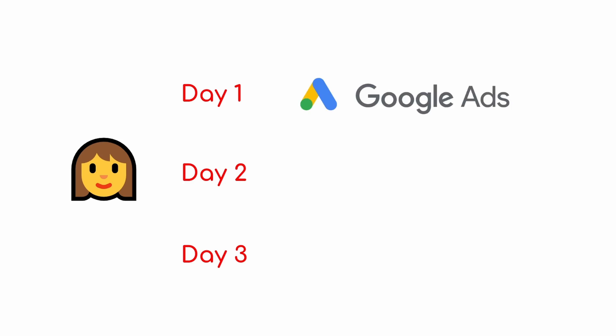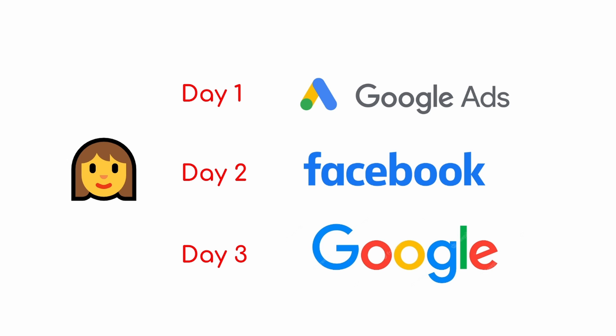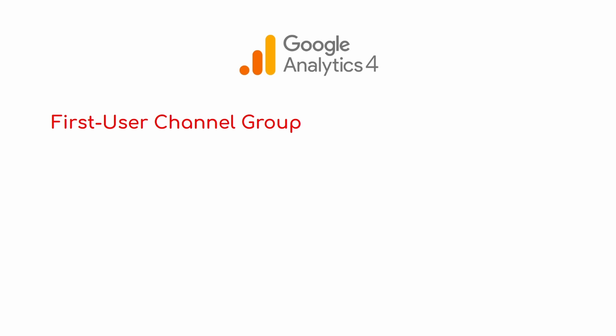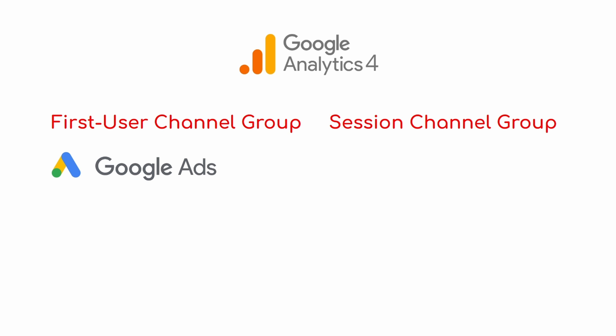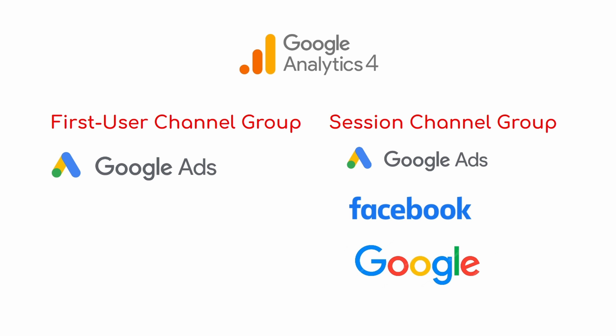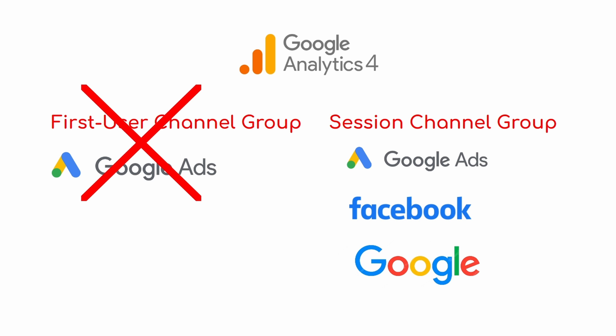Let me quickly explain the differences between the first user dimension and session dimension. Let's say Marta visits your website for the first time through an ad, then the second time through social media, and the third time via organic search. With the first user dimension, GA4 just tracks it as ads — Marta will always be counted as one user who came first from ads. With the session scope dimension, GA4 tracks it as one session from ads, one from social media, and one from organic search. Every time Marta comes to the website, her source is tracked.